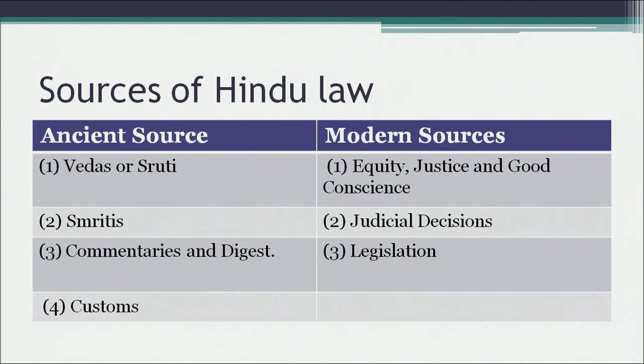The modern sources of Hindu law include: first, the principles of equity, justice, and good conscience followed by courts over time; second, specific judicial decisions on issues related to Hindu laws; and third, legislation — such as the Hindu Marriage Act 1955, the Hindu Guardianship and Minority Act, and the Hindu Maintenance and Adoption Acts. These are the modern sources of Hindu law.